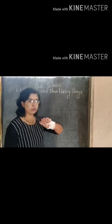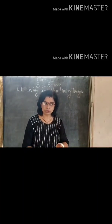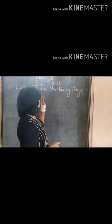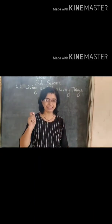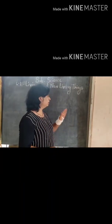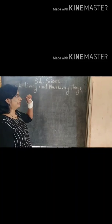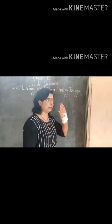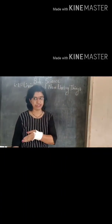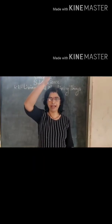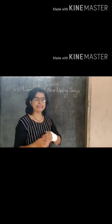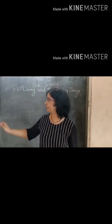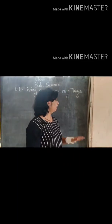Now, what are living things? Those things that are alive are called living things. We are alive. Animals are alive. Plants are alive. Those things that are not alive — like stone, table, chair, wall, this board, fan — these all come under non-living things. Let me discuss more scientifically what are the characteristics of living things and non-living things.